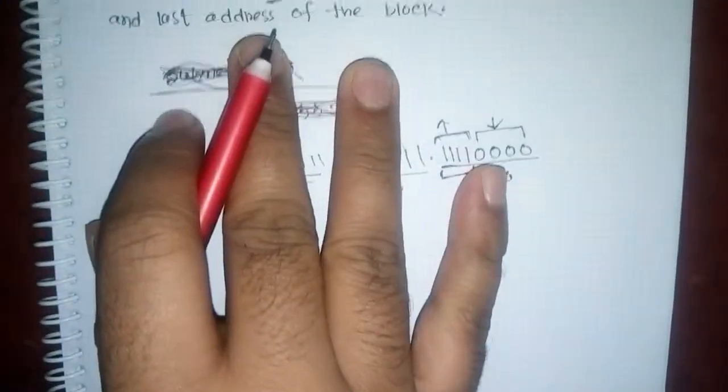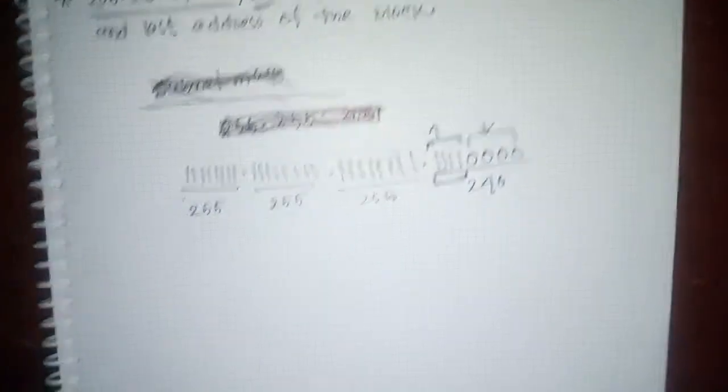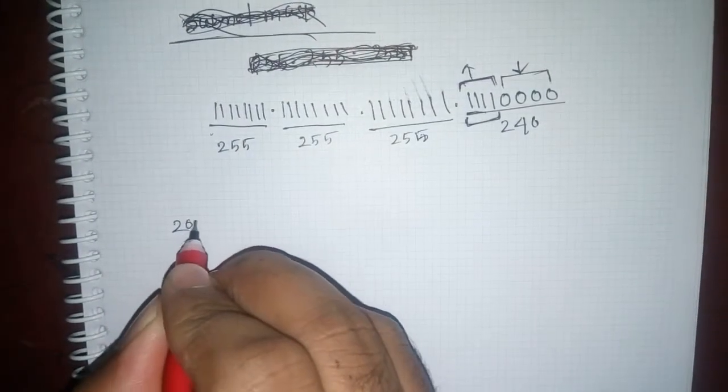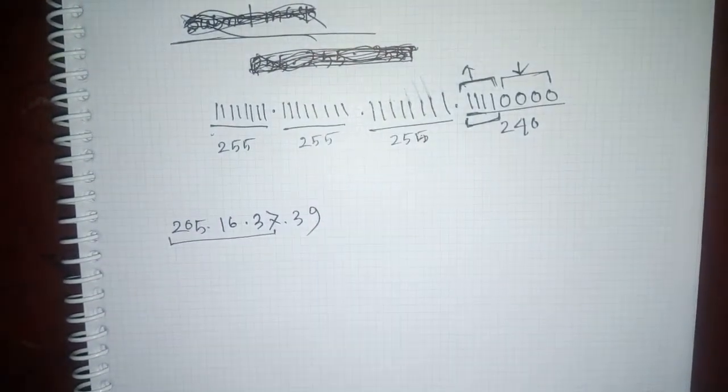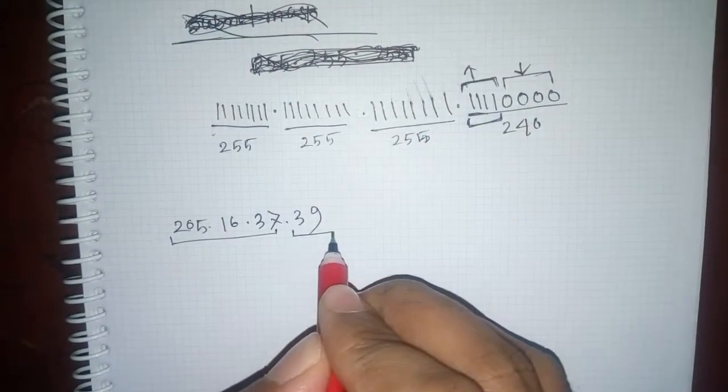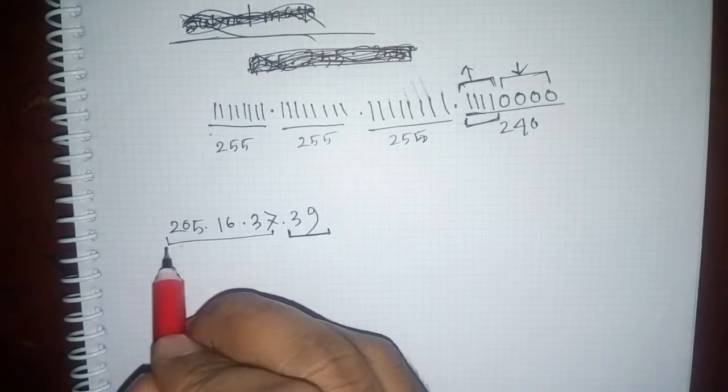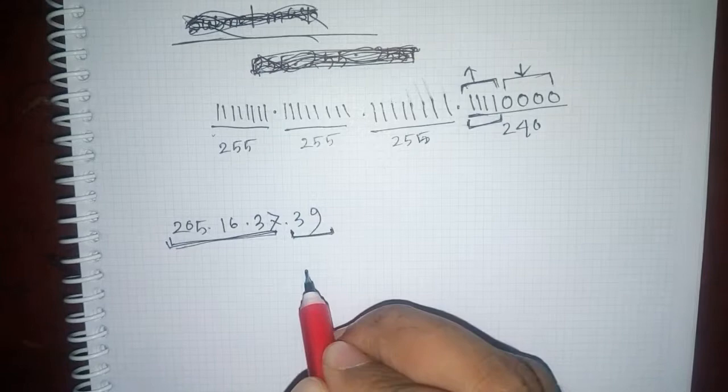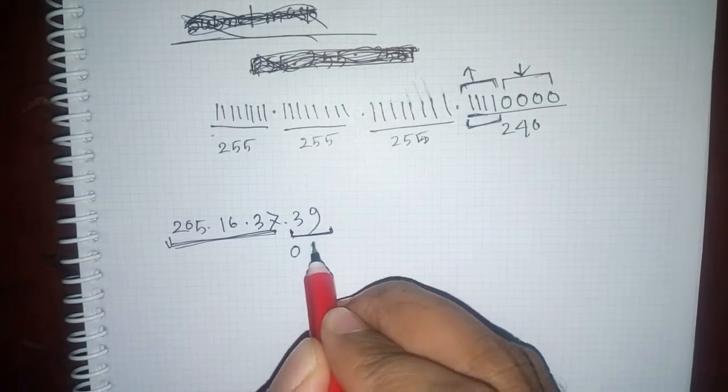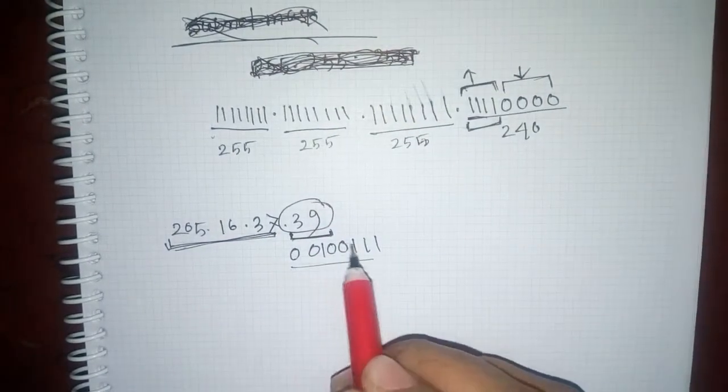So we will write the IP address. This is the IP address. We take the number 205.16.37.39. We need to convert the host to binary. We will take the binary number conversion. The IP address 39 in binary is 00111. Okay.